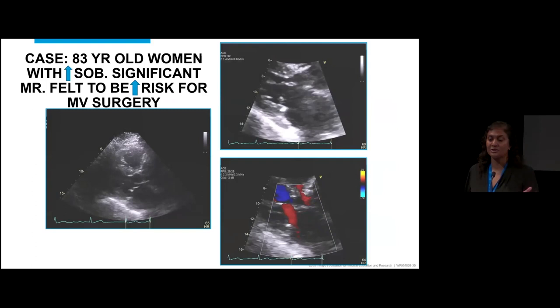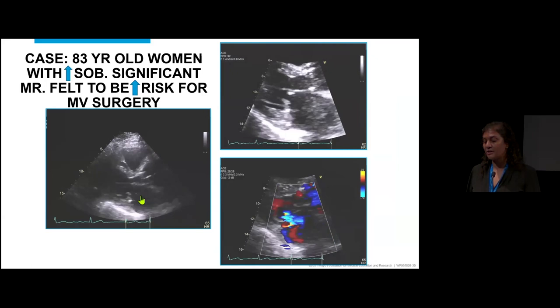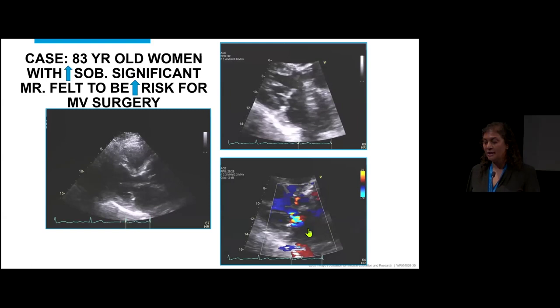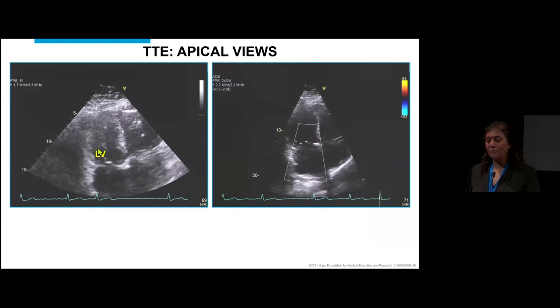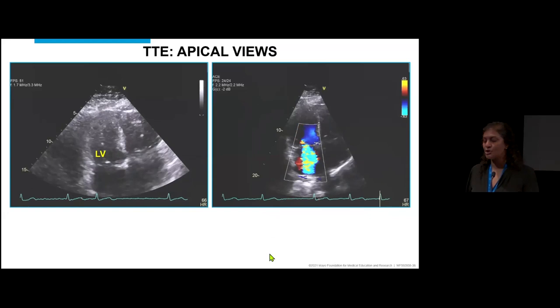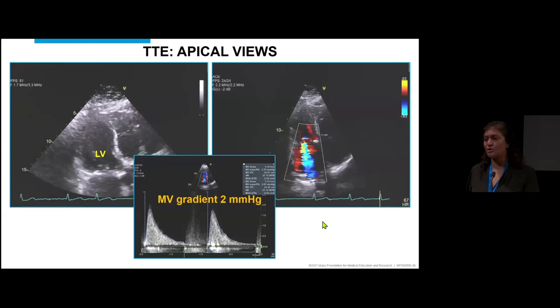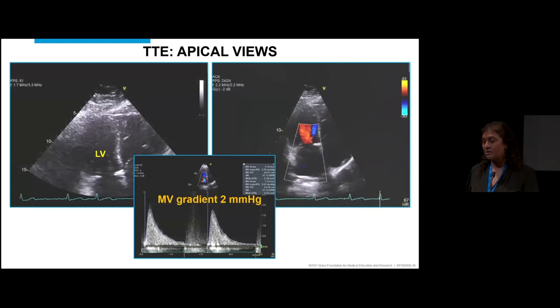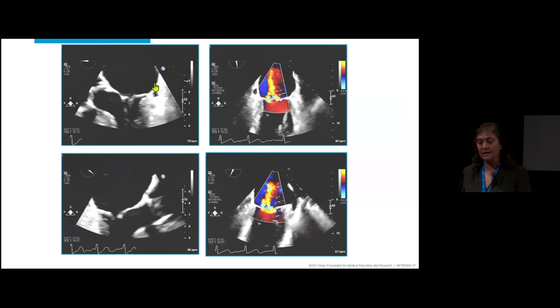Case: an 83-year-old woman with significant mitral regurgitation, quite short of breath, felt to be too high risk due to prior AVR. The transthoracic shows peristernal lung artifact, a thickened mitral valve with calcification, she's in AFib, and there is visually severe mitral regurgitation. A gradient of 2 mmHg across the valve, and the decision was made to proceed to MitraClip.